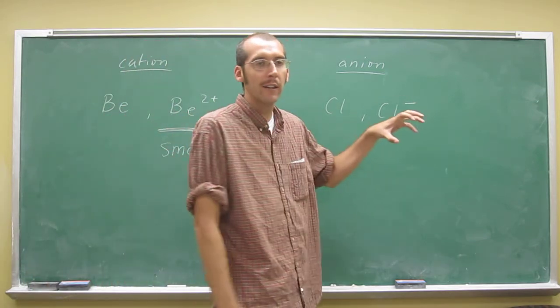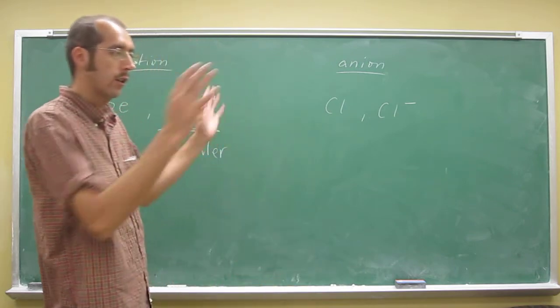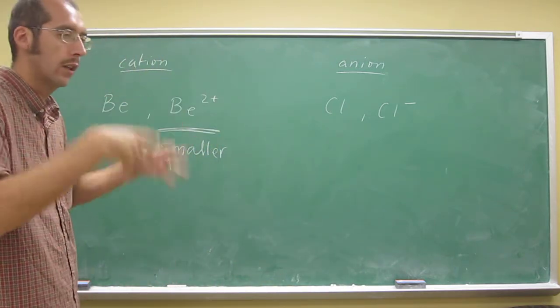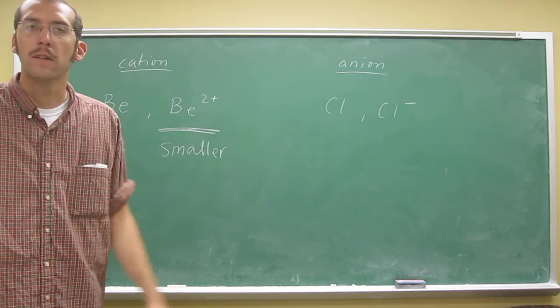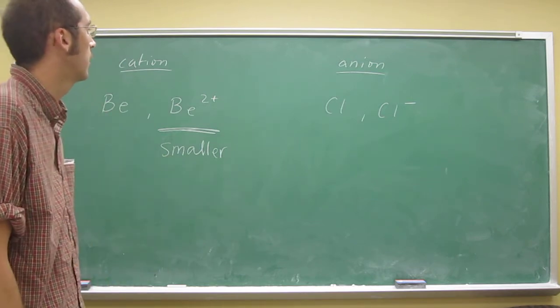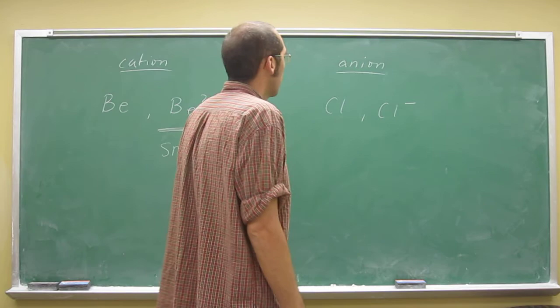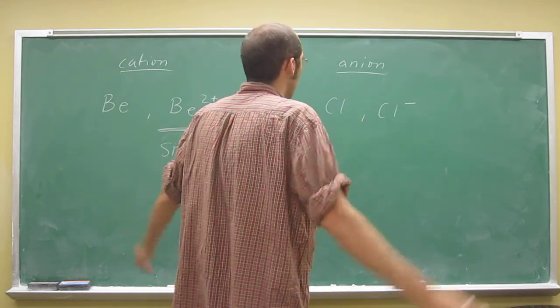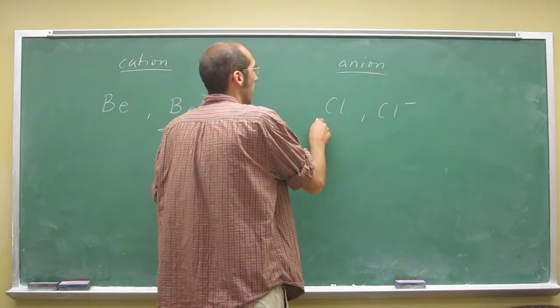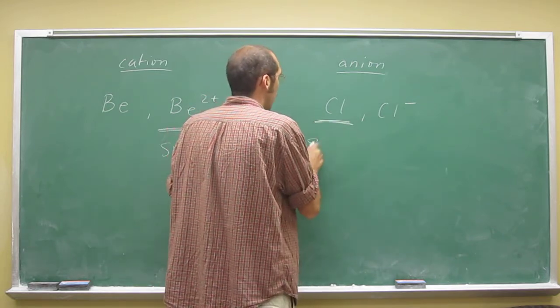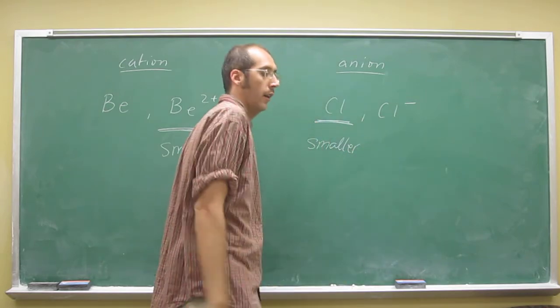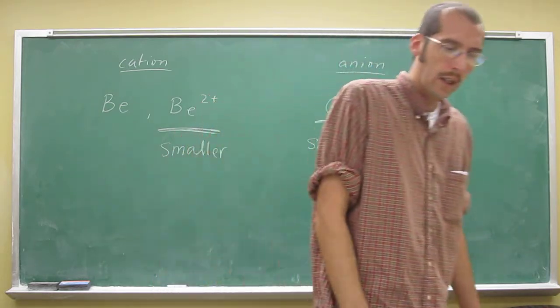So when you add an electron, there's more electronic charge, so it's more diffused because the nucleus doesn't have as much effect on the electron cloud. So it doesn't have as much pull. So it actually gets more diffused. So the parent atom is going to be smaller than its anion.